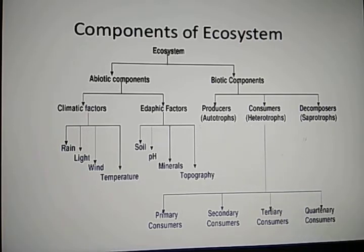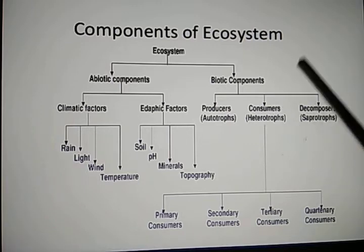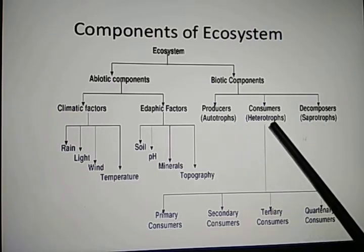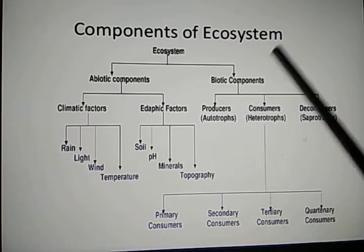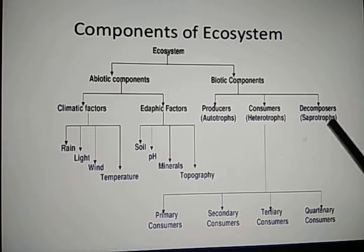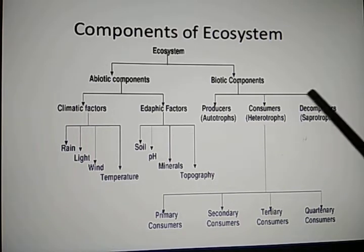Producers are normally the green plants, otherwise known as autotrophs, because they are able to prepare their own food. Second, we have consumers — those living beings that depend on the producer, also known as heterotrophs. Then we have decomposers, which help producers and consumers to decompose. They are also known as saprophytes, such as mushrooms and fungi.